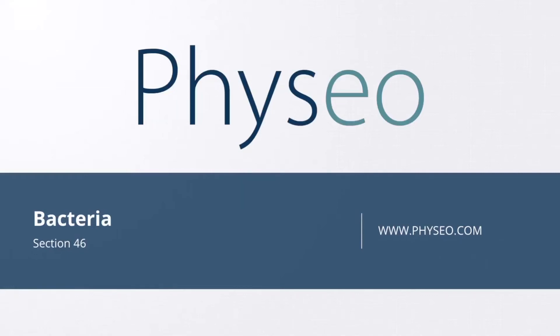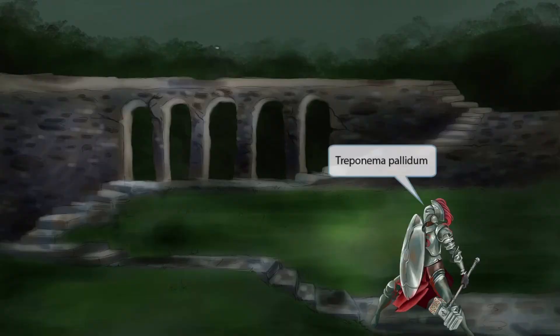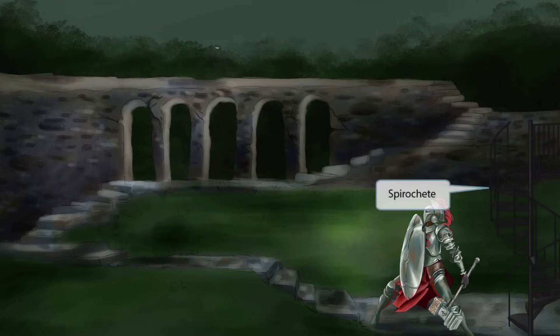Welcome to section 46 of Bacteria. This is our Bacteria overview figure, and we'll be discussing Treponema pallidum, which is the organism responsible for syphilis. This scene takes place during the time of lords, magic, goblins, hobbits, and powerful rings. The first character is the paladin warrior — paladin sounds like Treponema pallidum, so this hero will be our symbol for this bug. The spiral staircase in the image helps you remember that Treponema pallidum is a spirochete.